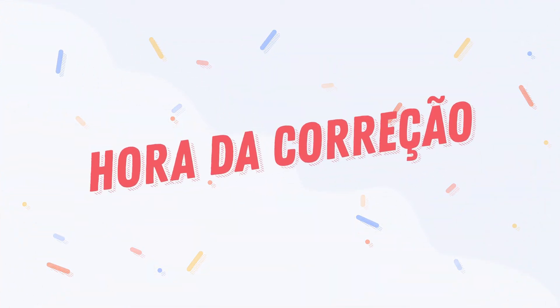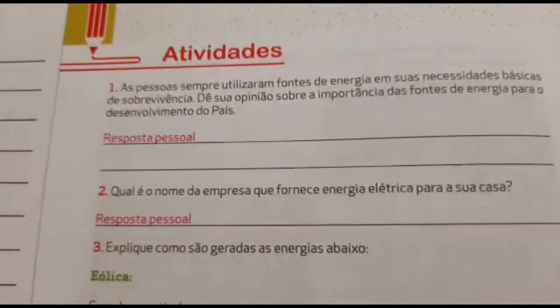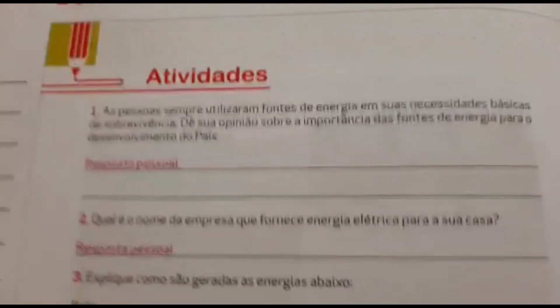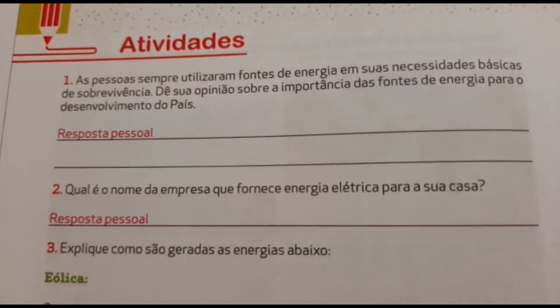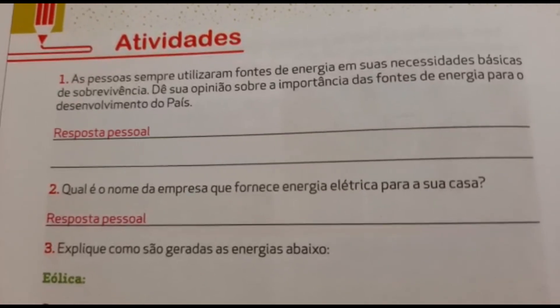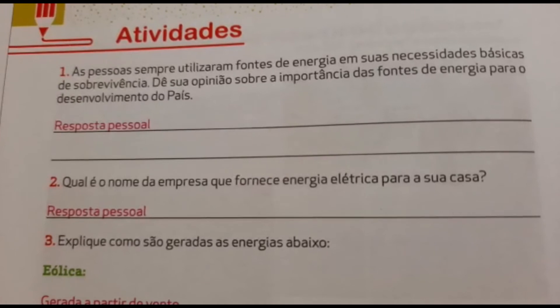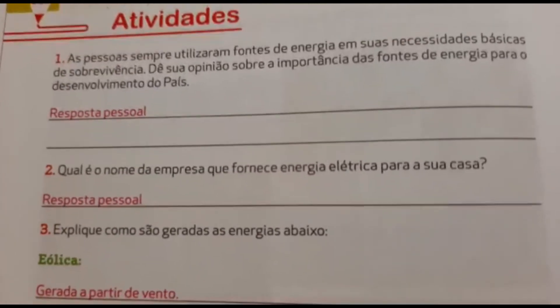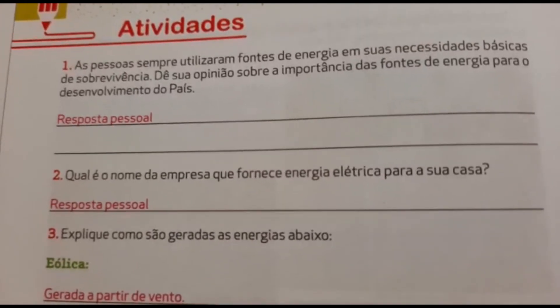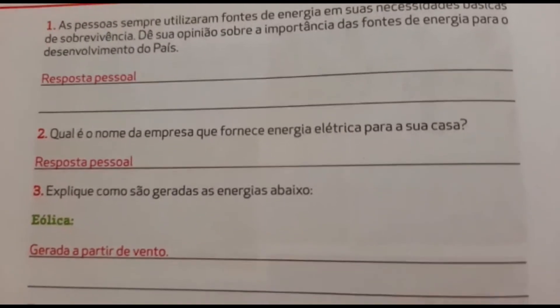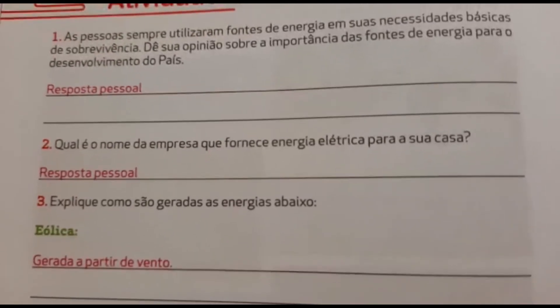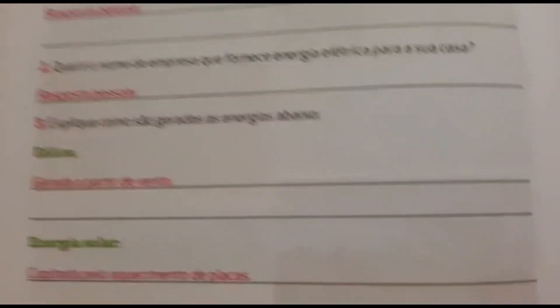Façam agora a página 104. Daqui a pouco a tia corrige. Vamos para a correção da página 104. A questão número 1 são respostas pessoais. As pessoas sempre utilizam fontes de energia em suas necessidades básicas de sobrevivência — dê sua opinião sobre a importância das fontes de energia para o desenvolvimento do país. Vocês vão pensar no texto que a tia leu e vão dar a opinião de vocês. Número 2: qual é o nome da empresa que fornece energia elétrica para a sua casa? Vê lá na conta de luz, lá está escrito o nome, anotem aí.